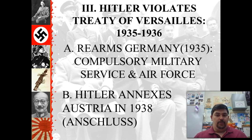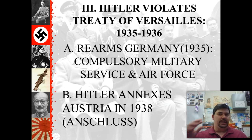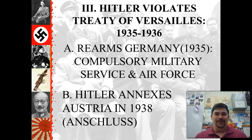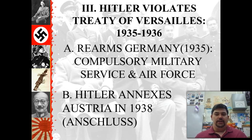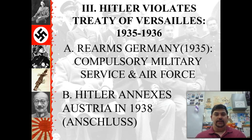First thing: start breaking the Treaty of Versailles — rearm Germany. Hitler had his own private army of brown shirts, the SA, formed by Ernst Röhm, which by 1934 numbered 2.5 million people. He folds those guys into the Wehrmacht, the German army, and makes compulsory military service mandatory for all men. He also begins to rebuild the Air Force and rebuilds Germany's tank force, leading to Germany having Panzers — their big tank known from World War II. Then he moves into the Rhineland, the land right on the west side of Germany next to France.